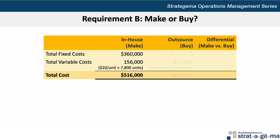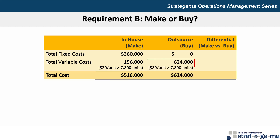To outsource, the total costs are $624,000, calculated as $80 per unit times 7,800 units. The total cost to buy then is $624,000.